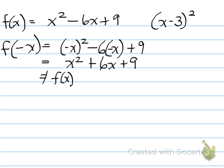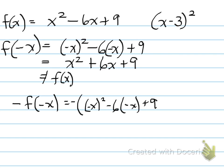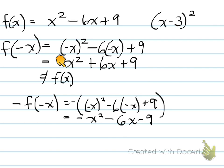So we test for odd. We plug in negative f at negative x: we have a negative in front of the whole thing and negative x inside. This gives us negative x squared minus 6x minus 9 after distributing the negative. That does not equal f at x, so this function, x squared minus 6x plus 9, is neither even nor odd.